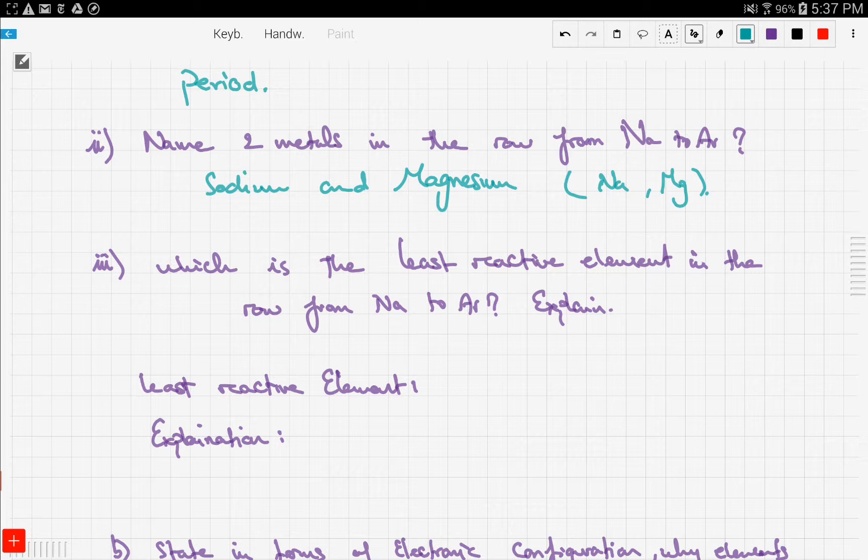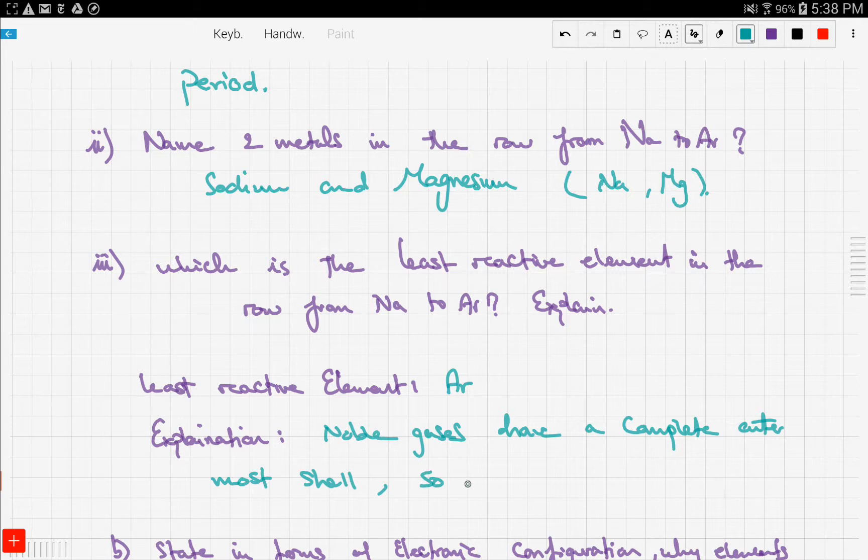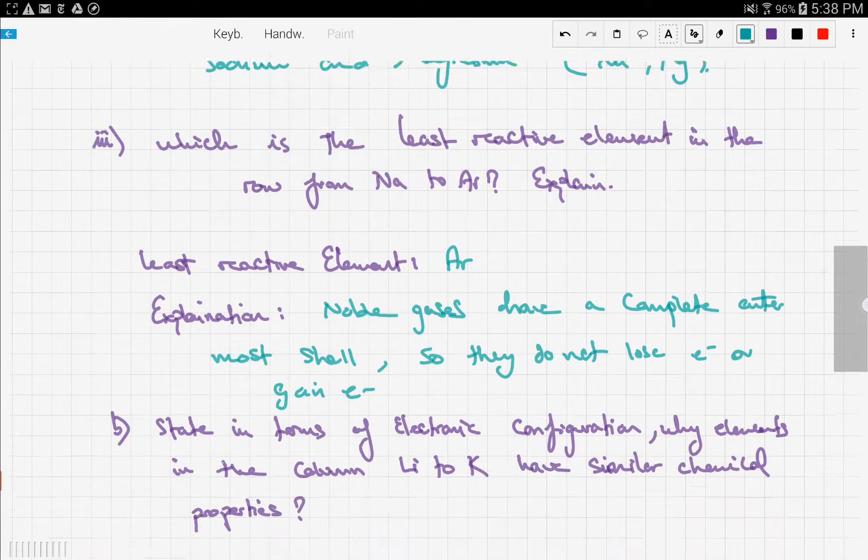videos we said that noble gases are the least reactive elements in the periodic table. The only noble gas in this row is argon. Why? Noble gases have a complete outermost shell, so they don't lose or gain electrons. That's your answer.